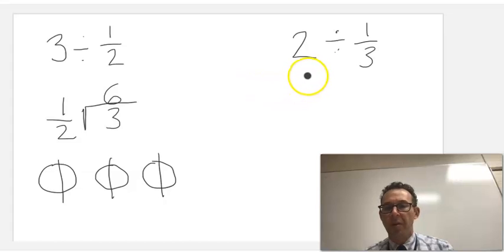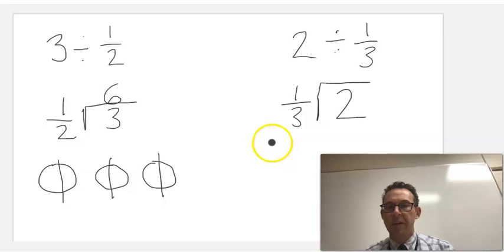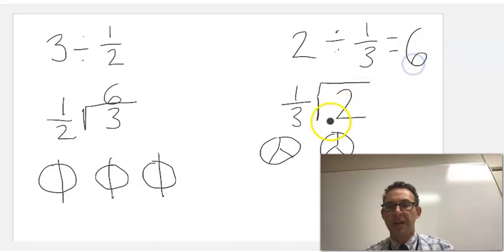As another example, if it's 2 divided by 1 third, I can again rewrite it and ask, how many times does 1 third go into 2? Here's my 2 wholes, and if I'm cutting them into 3rds, I can see that there are 1, 2, 3, 4, 5, 6. There are 6 thirds in 2, or 1 third goes into 2 six times, and 2 divided by 1 third is 6.